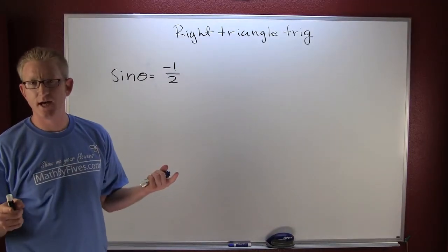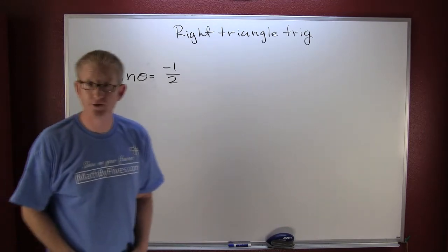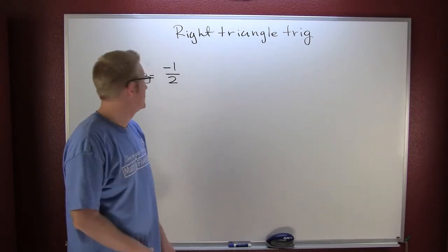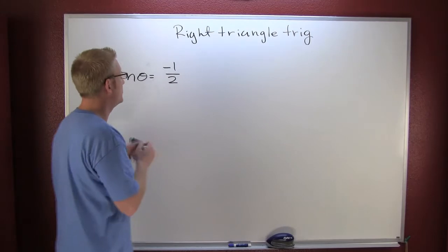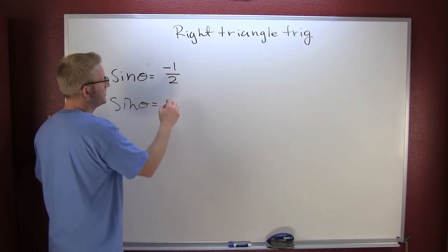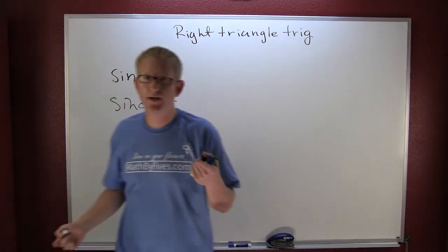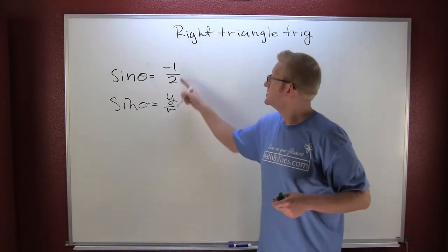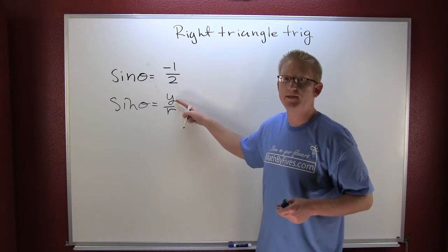Suppose they told you that the sine of an angle was negative one half and you intended on using right triangle trig to find the other five. We know that the sine of theta is y over r. For right triangle trig, r is our hypotenuse, so it's always going to be positive. So we're going to have a radius of 2 and a y value of minus 1.